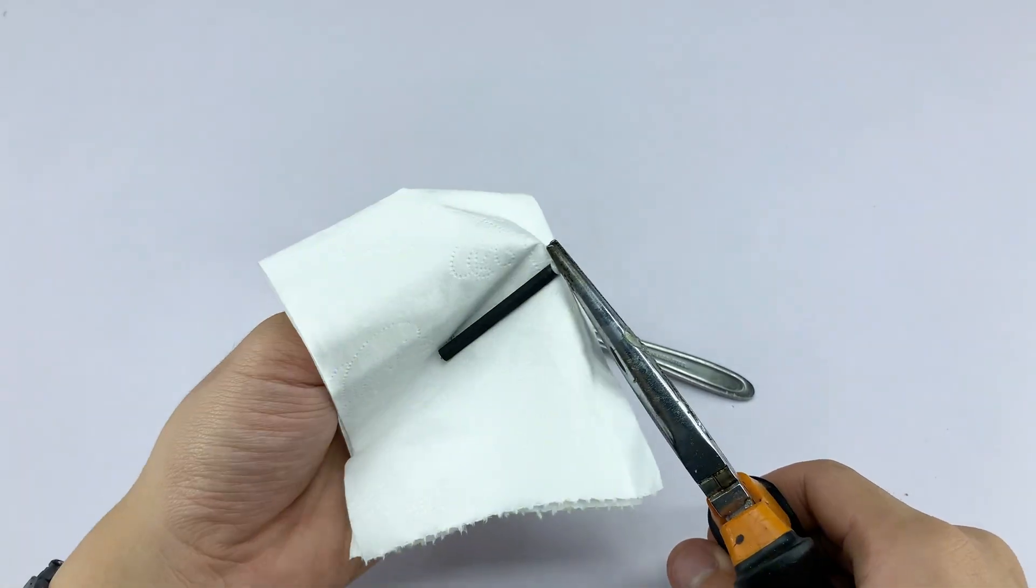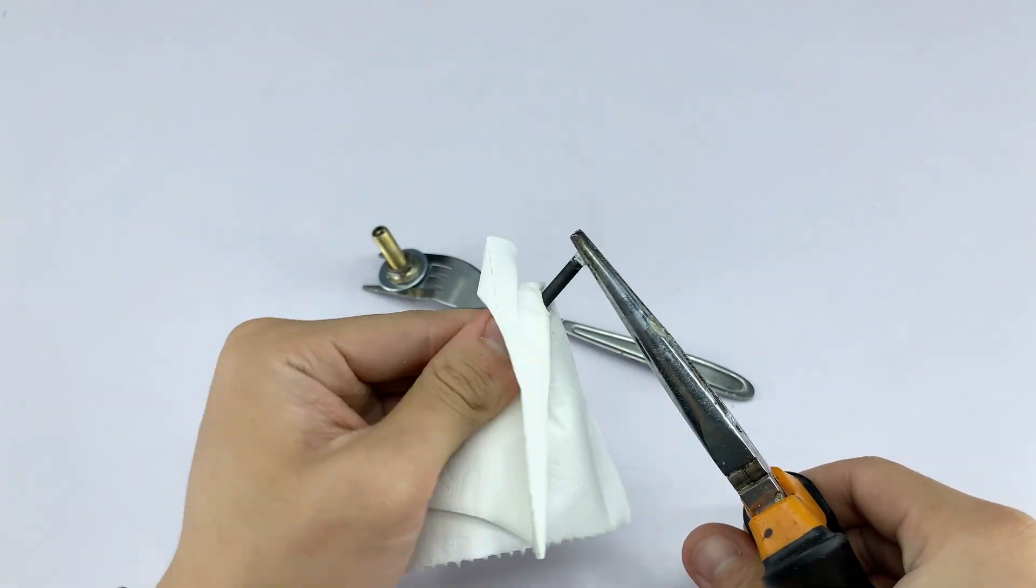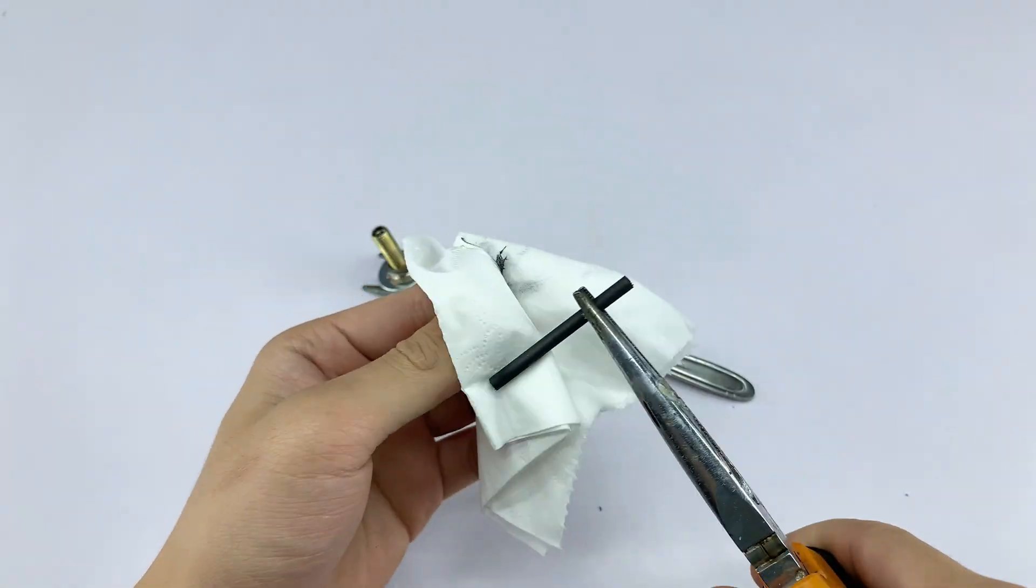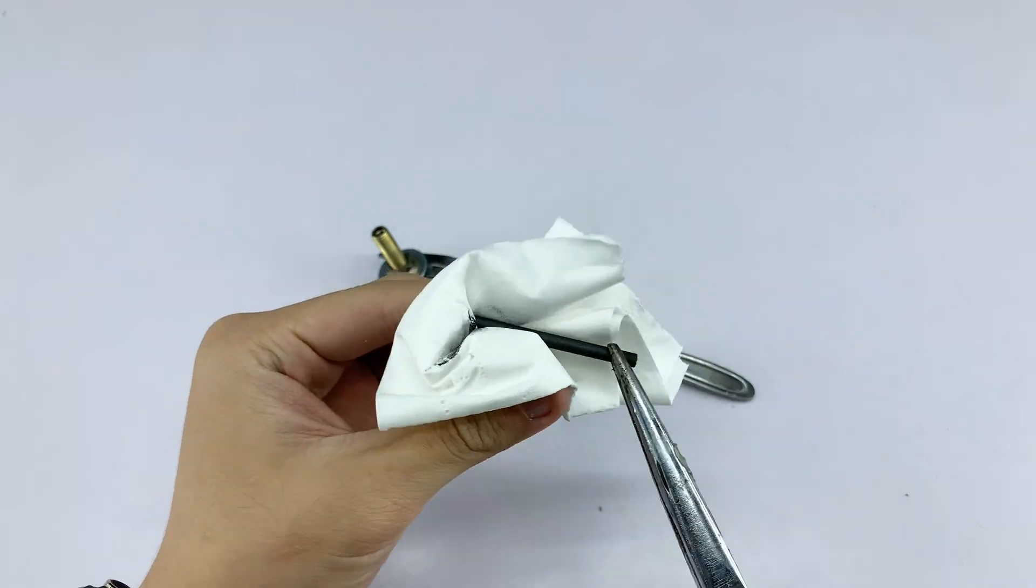After removing the casing, I'm gently wiping down the carbon rod with a piece of tissue. This helps remove any residue or electrolyte, ensuring a cleaner and more efficient heating element.